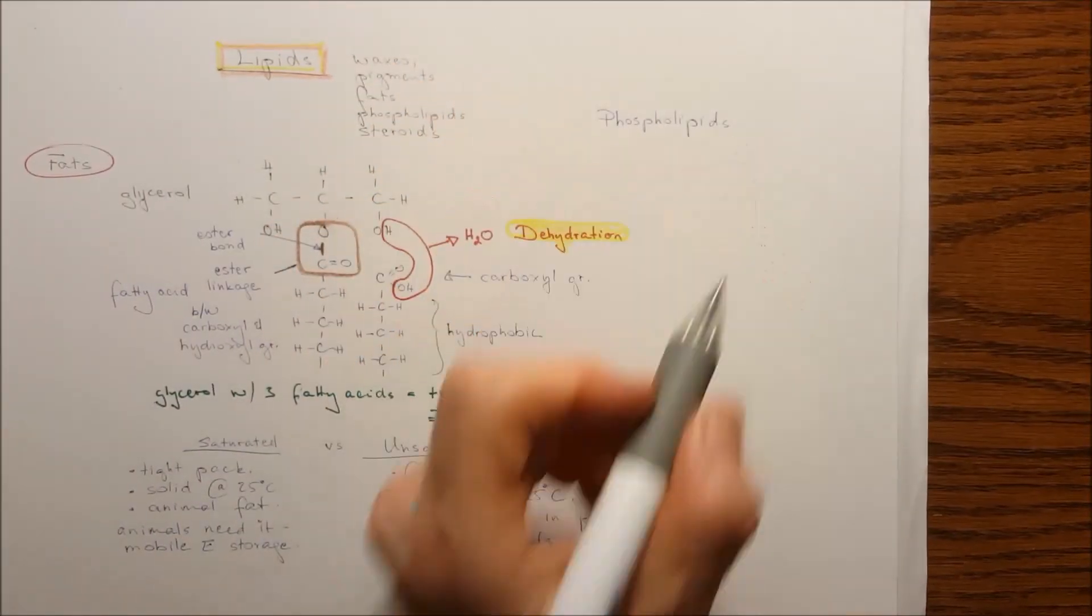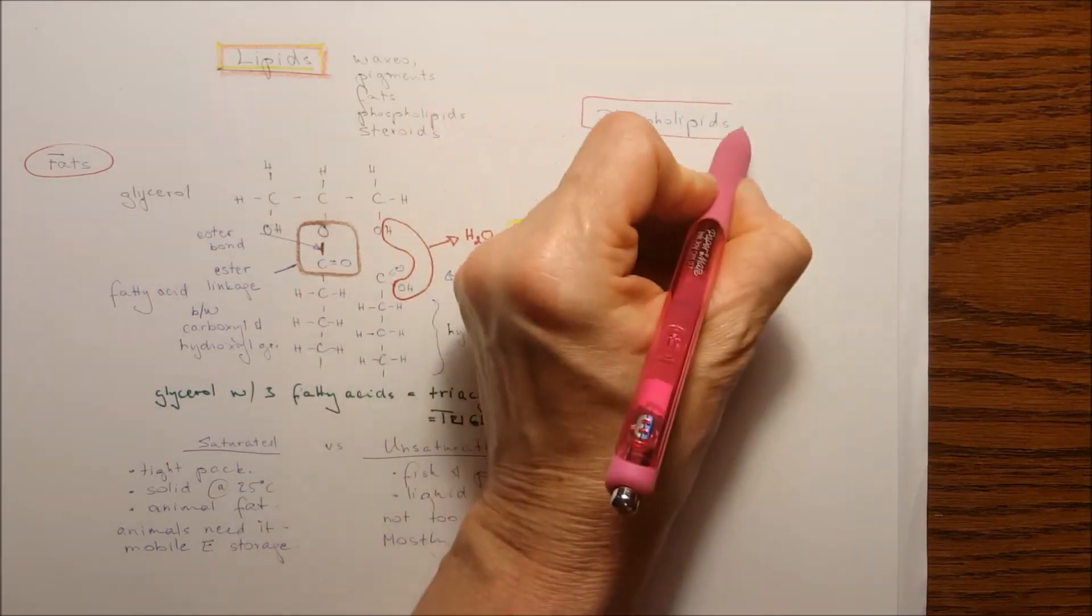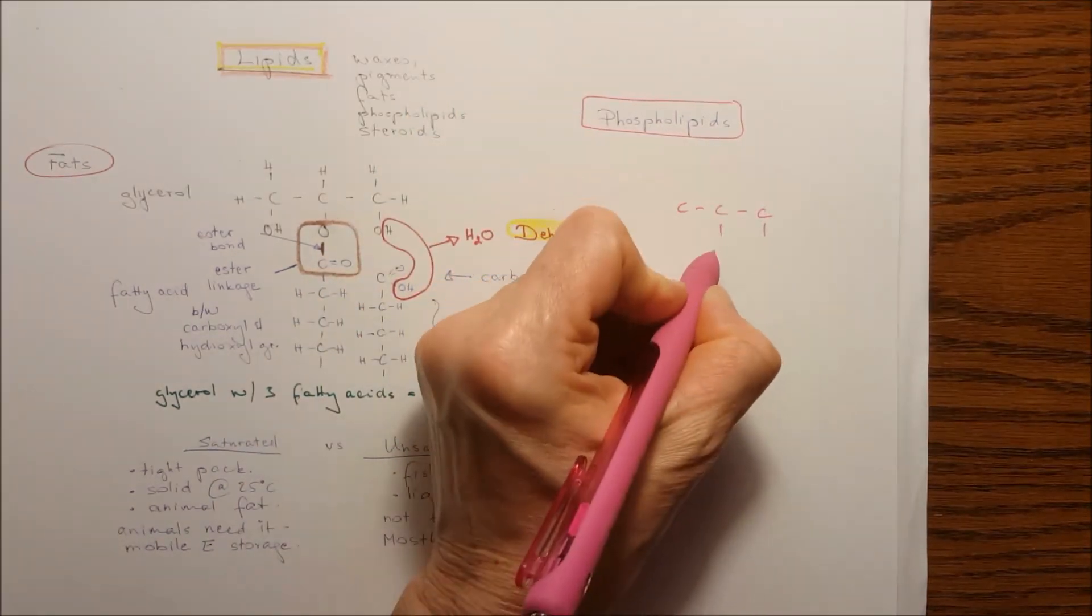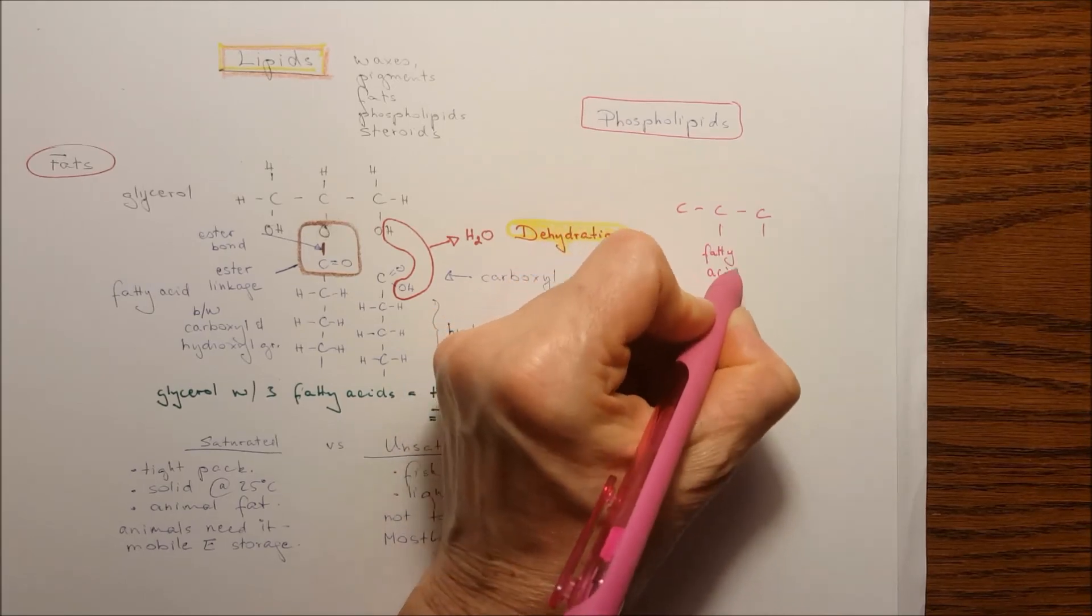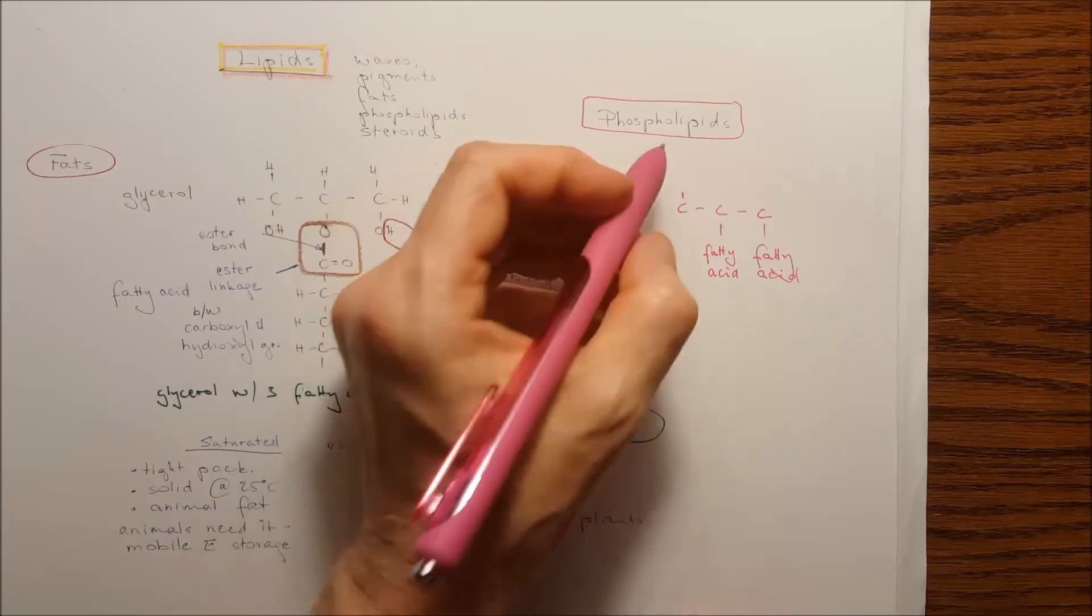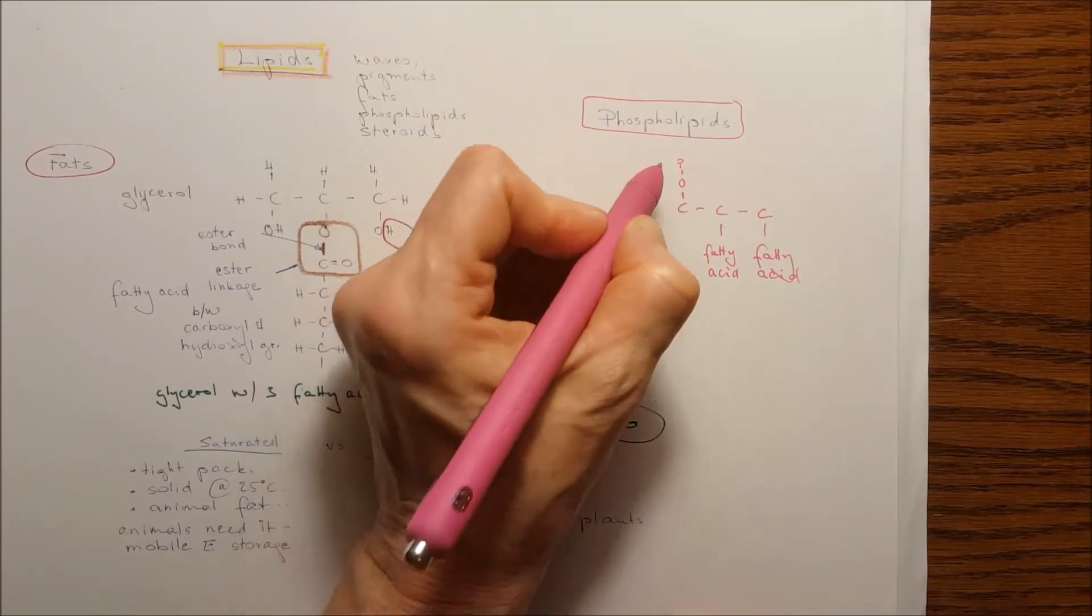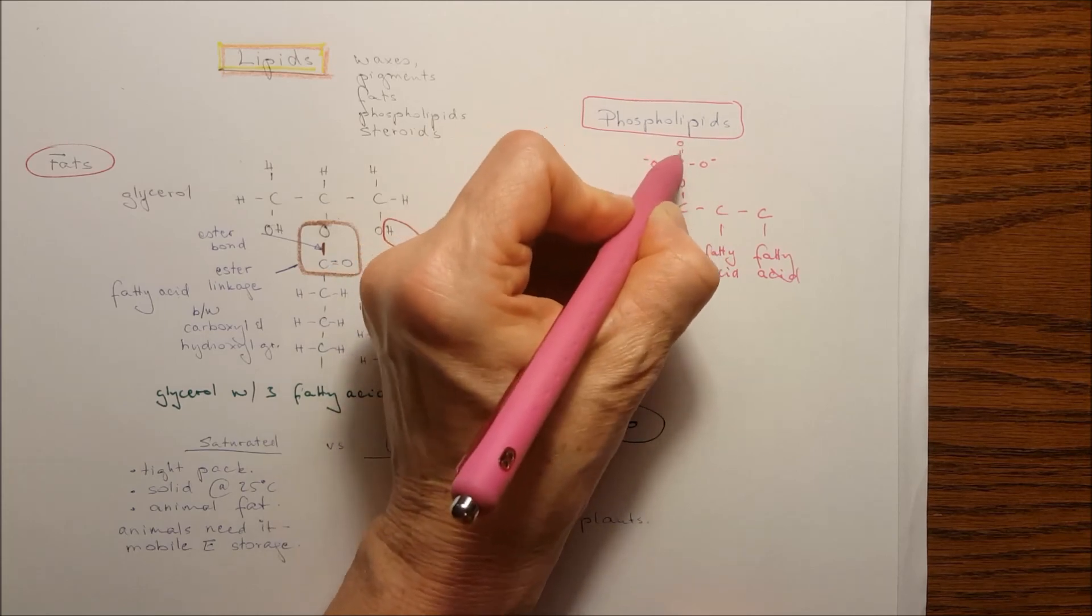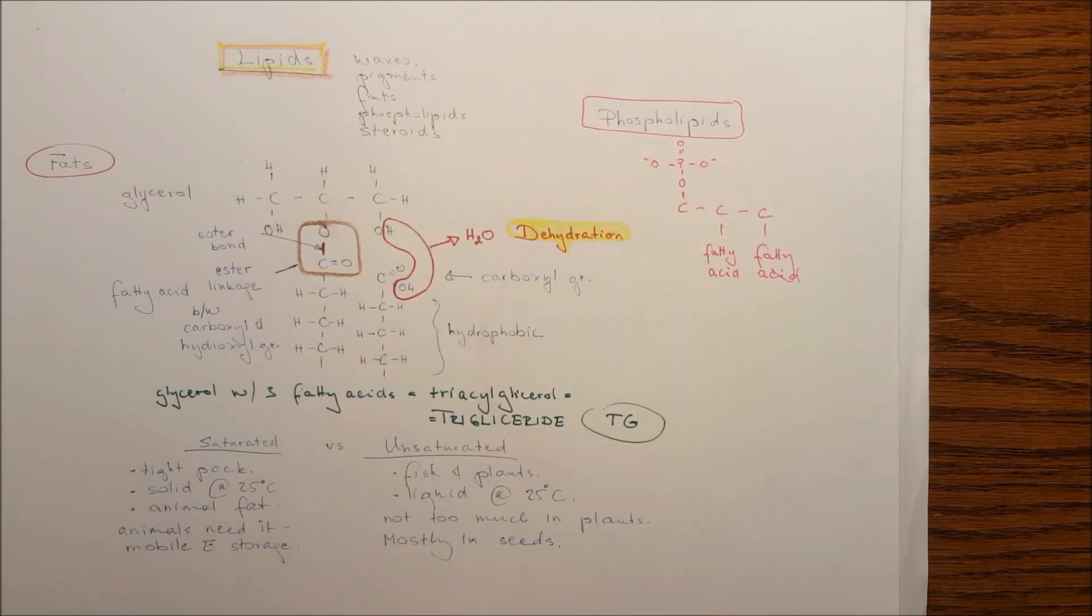Phospholipids, very fast. We will deal with phospholipids later on with the membrane structure. We have the glycerol backbone. I'm just drawing the backbone and two fatty acids are hanging off from the carbons. And for the first carbon, there's a phosphate group attached to it.